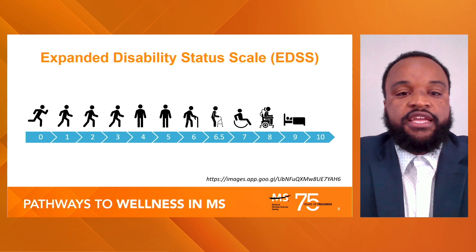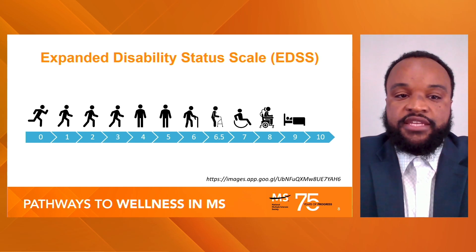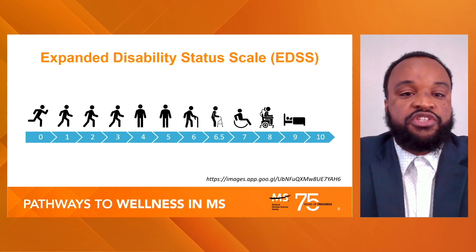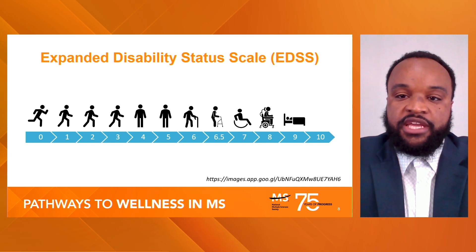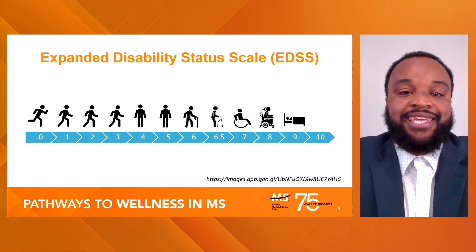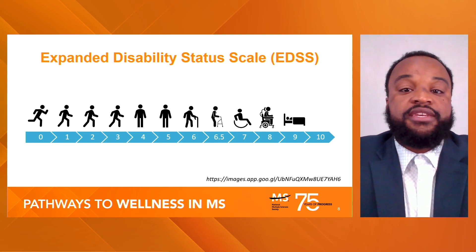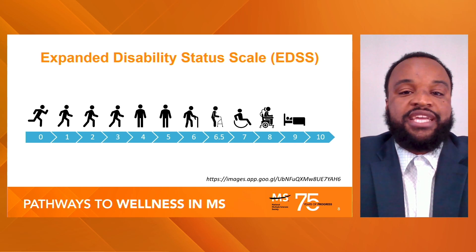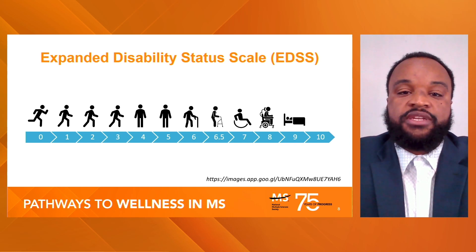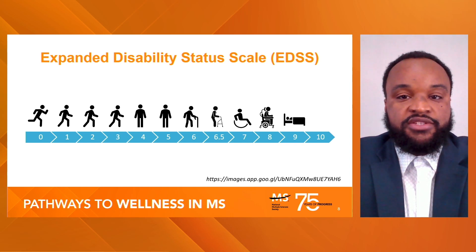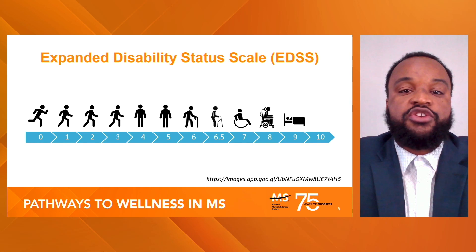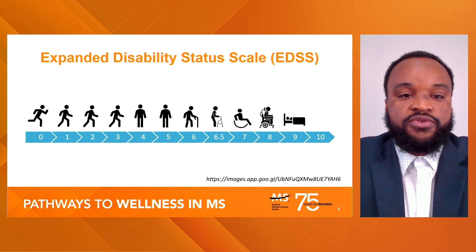The EDSS is an ordinal clinical rating scale ranging from zero — normal neurological examination — to 10, which would be death. The assessment tool has been used in virtually every major clinical trial conducted in MS during the last four decades, and in numerous other clinical studies.